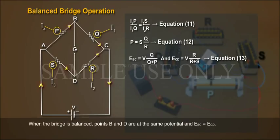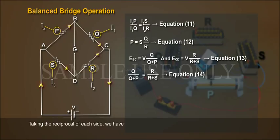When the bridge is balanced, points B and D are at the same potential, and EBC equals ECD. Thus, Q by Q plus P equals R by R plus S, Equation 14. Taking the reciprocal of each side, we have: